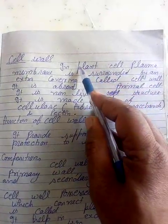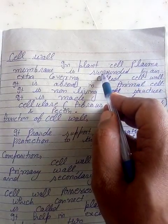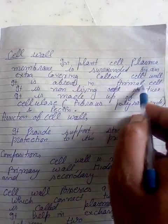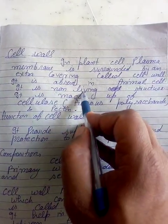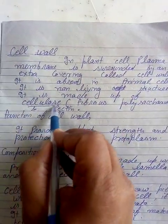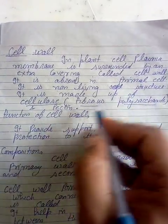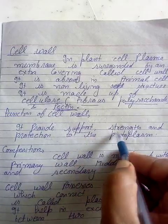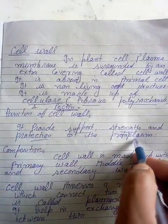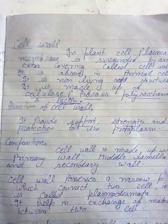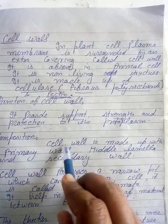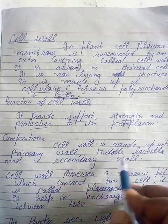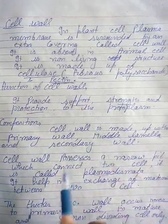Cell wall — plant cell ko surrounding karne wali jo structure hai use cell wall kehte hain. It is absent in animal cells. Cell wall fibrous polysaccharides ke saath saath pectin aur protein se bhi bani hoti hai. Cell wall ke function: it provides support, strength, and protection to the protoplasm. Composition mein cell wall ke andar hum dekhenge — primary wall hai, middle mein humare paas middle lamella hai, aur next phir secondary wall — yeh teen humare paas cell wall ke parts hote hain.